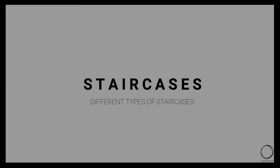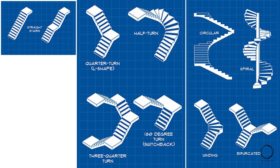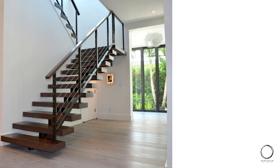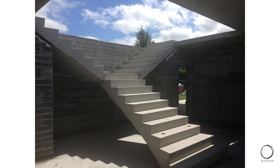The next term is staircases. There are different types: straight staircases, straight staircases with landing, quarter circular turn, half turn, third quarter turn, 180-degree turn, circular staircase, spiral staircase, winding staircase, and bifurcated staircase. Staircases are made of different materials including wood, mild steel, and most commonly, concrete.